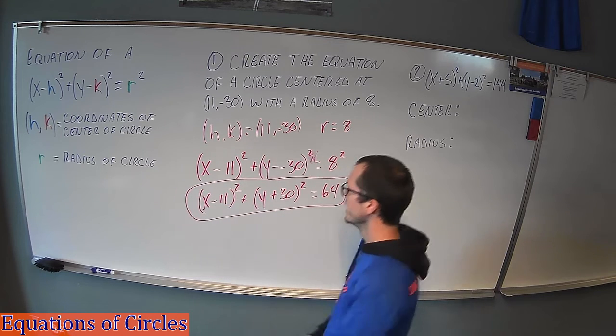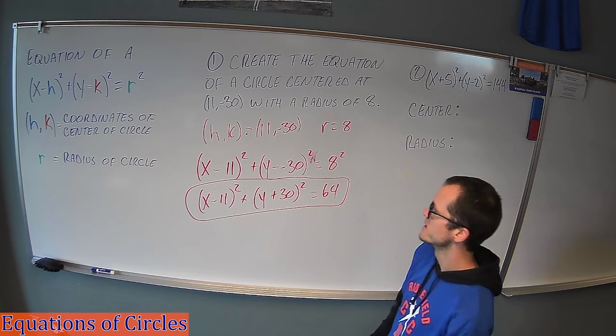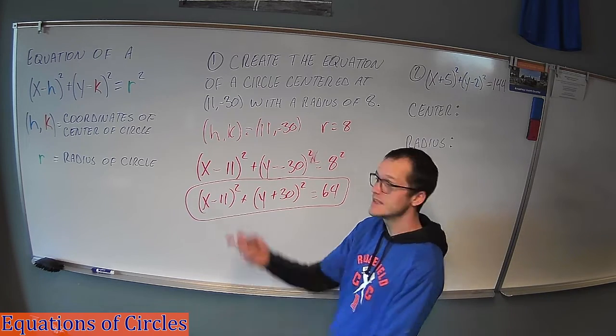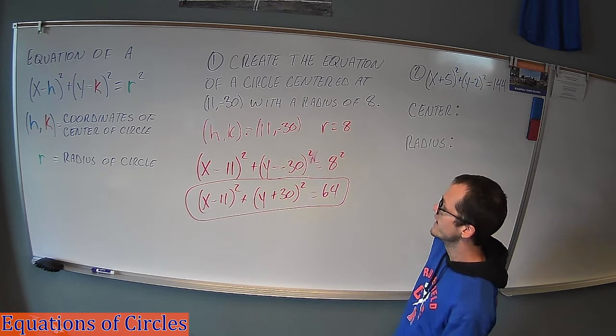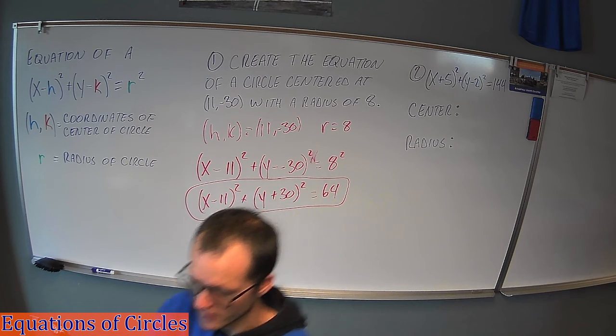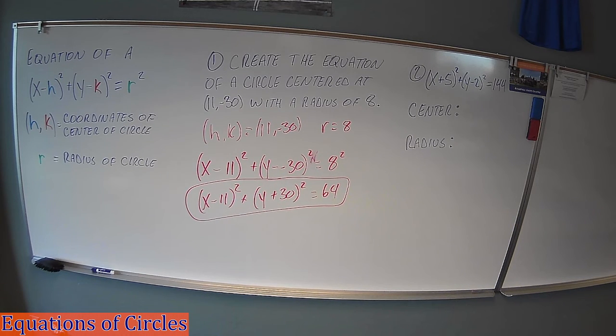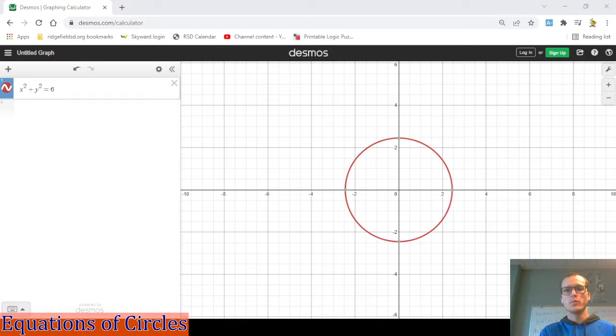What I want to do now is confirm that this makes sense. So I'm going to throw it in Desmos. And what we should see is that this thing is centered at (11, -30) with a radius of 8 units. So I'm going to flip this over, flip this around real quick. And here we go.